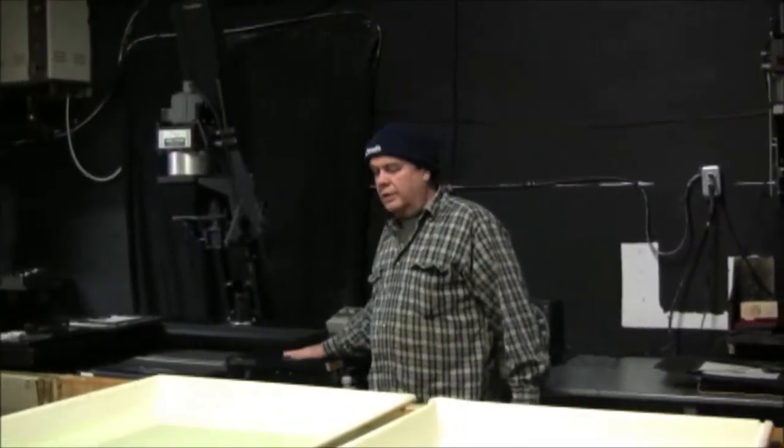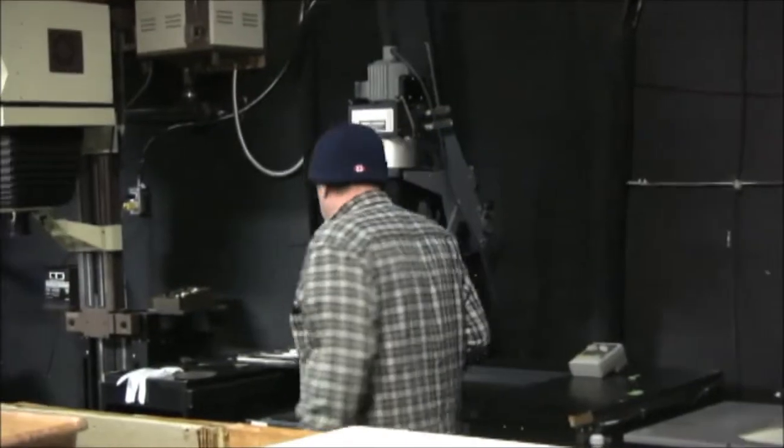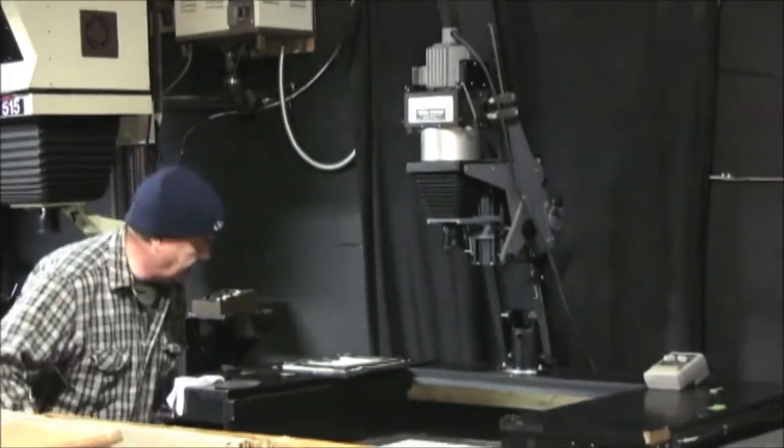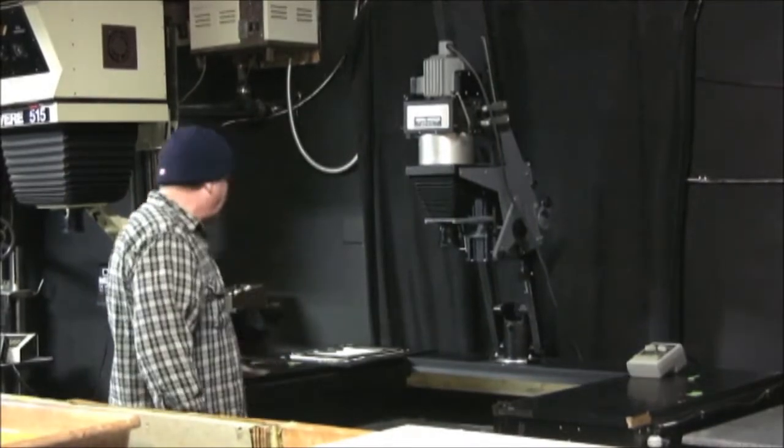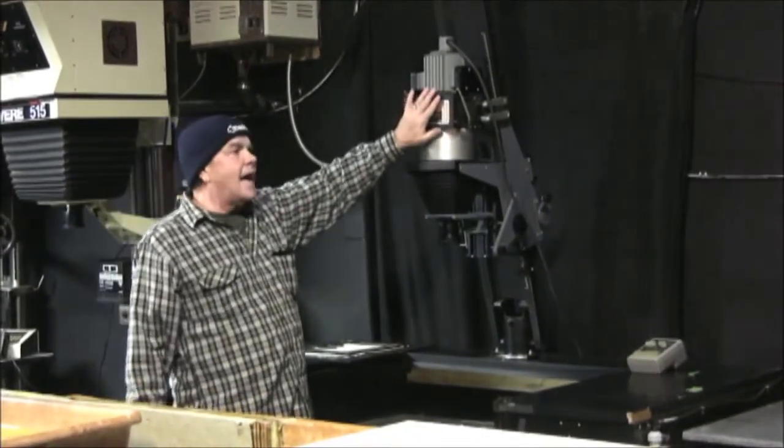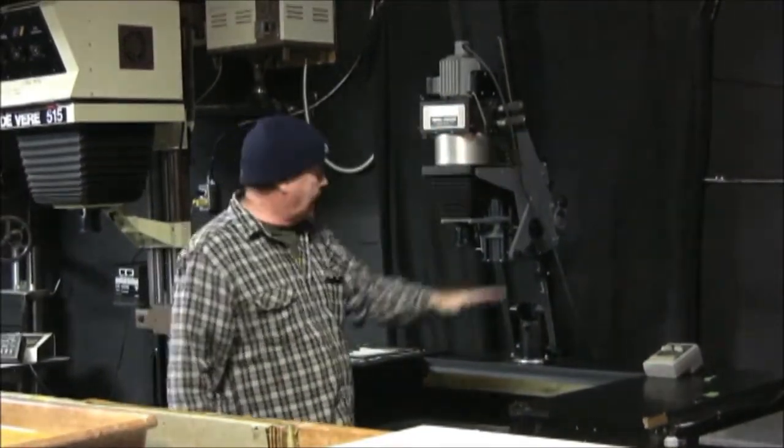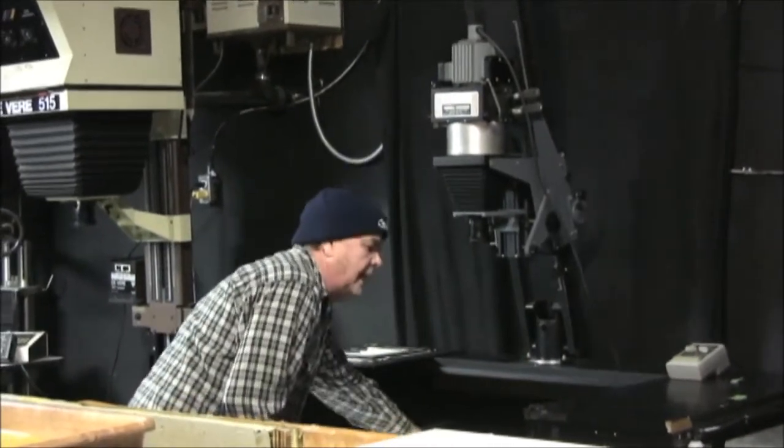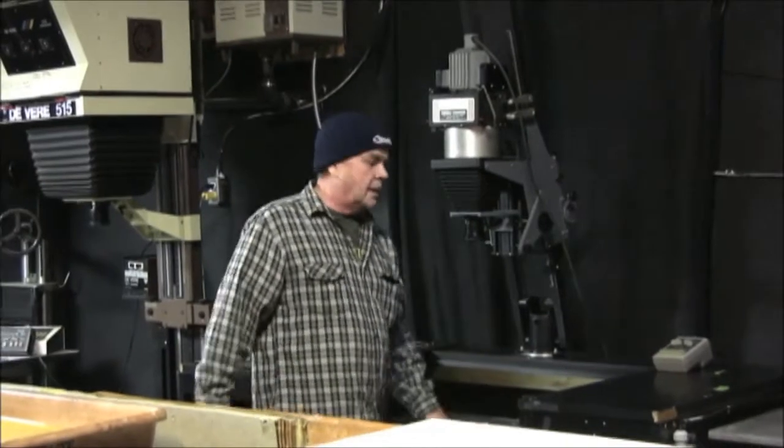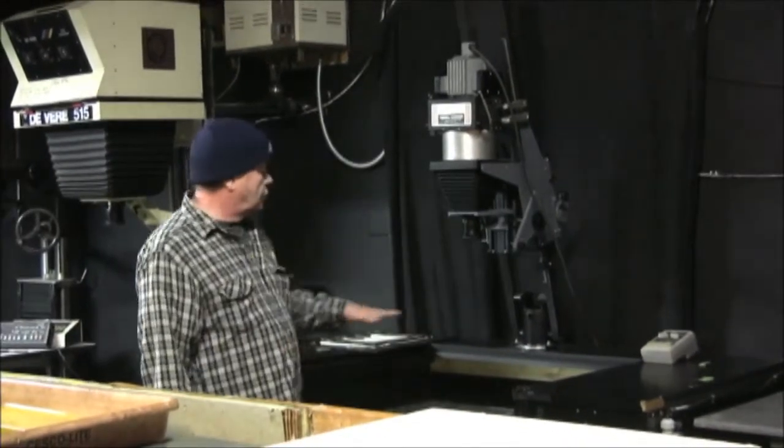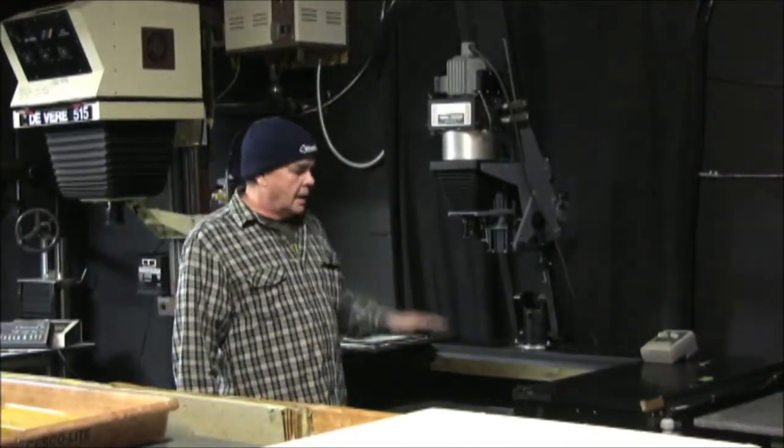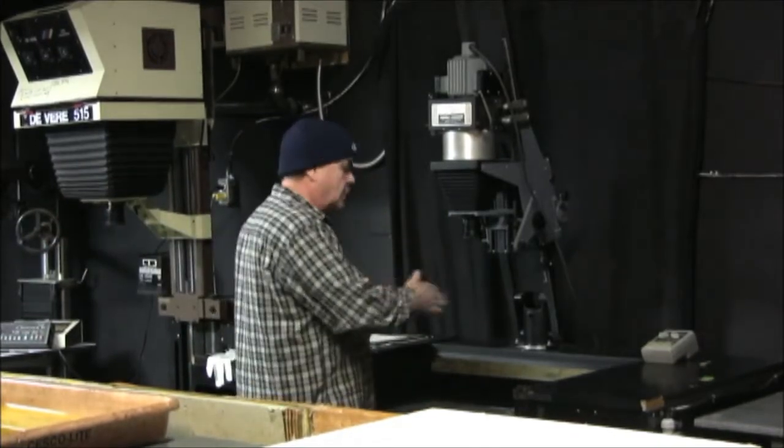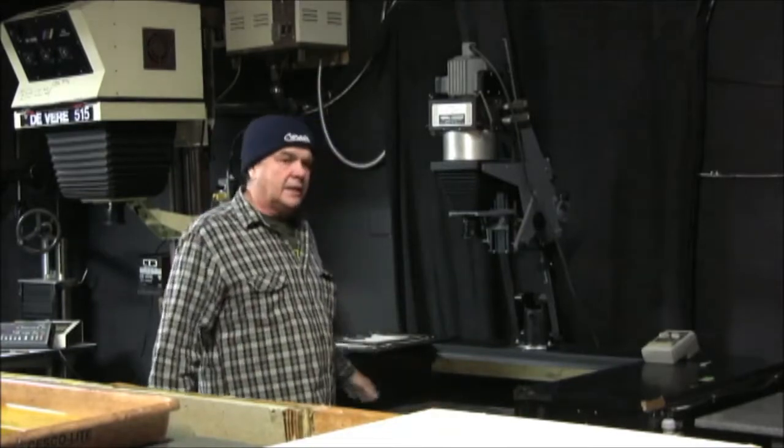Now we move over to a slightly different table. This is my drop table. Basically it's the same idea, exact same setup as here, except this one's mounted to the table. I can move my easel up and down to get lower down to make a larger print. This allows me with a 4x5 negative to make 20 by 24s quite easily.